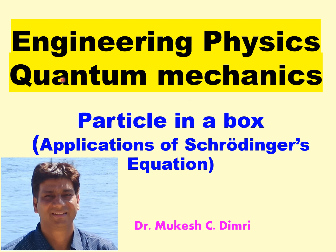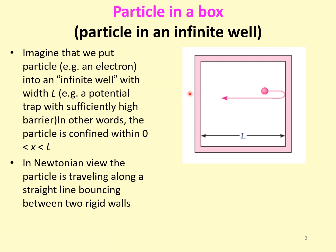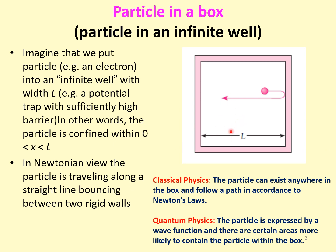In this video I will discuss the application of the Schrödinger equation. One example is particle in a box or infinite potential wall. I will discuss the Schrödinger wave equation for particle in the box and the tunneling phenomena. If a particle is inside this box of length L, then it is confined from 0 to L. According to classical physics, the particle can exist anywhere inside the box and should follow Newton's law.